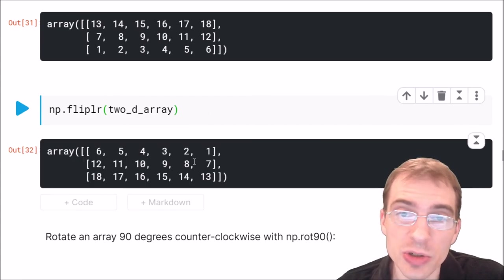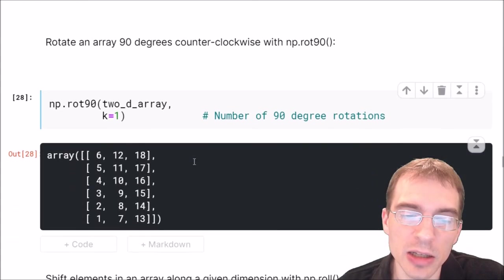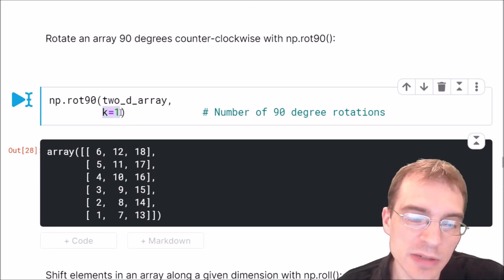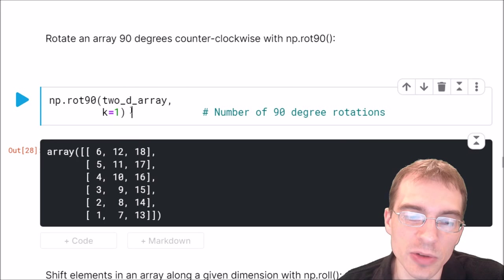You can also rotate 2D arrays using dot rot 90. The argument k specifies how many times to carry out the rotation. In this case, we're only rotating by 90 degrees once, but you can do that multiple times to get different rotations.